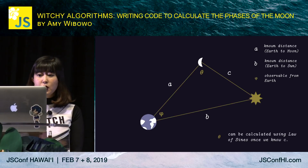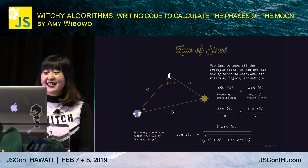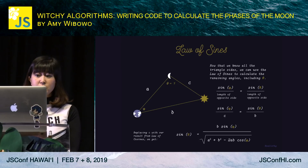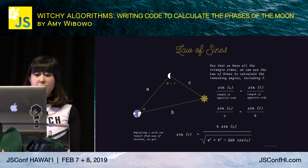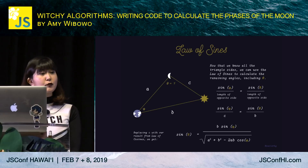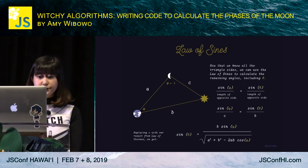Now that we know the length of c, we can calculate theta — the angle between the earth and the sun from the moon's point of view — using the law of sines. The law of sines states that the sine of an angle divided by the length of the side opposite that angle equals the sine of any other angle divided by the length of its opposite side. So sine of phi over c equals sine of theta over b. We substitute in the value of c from the law of cosines to get sine of theta, and then theta is the arcsine of that value.